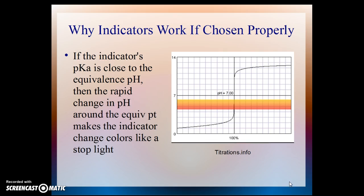If the pKa of the indicator is close to the equivalence pH, then the rapid change in pH around the equivalence point will make the indicator change colors just like a stoplight. So as we run up to the equivalence point, we have a very small change in pH. But again, this is a very strong acid and strong base.